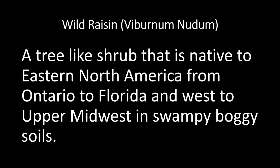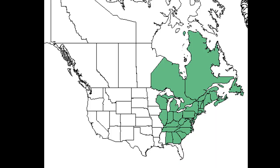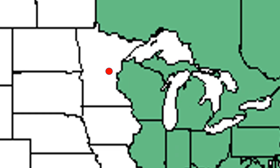A wild raisin is a tree-like shrub that is native to eastern North America, starting from Ontario, Canada down to Florida and Georgia, and all the way west to upper Mississippi states like Wisconsin. They thrive in swampy, boggy soil. Here is a picture off the internet shaded in green where they grow. I live in the state of Minnesota, right where the red dot is, and I have them in my yard — so obviously this map is not fully accurate, but they've been introduced pretty much everywhere.